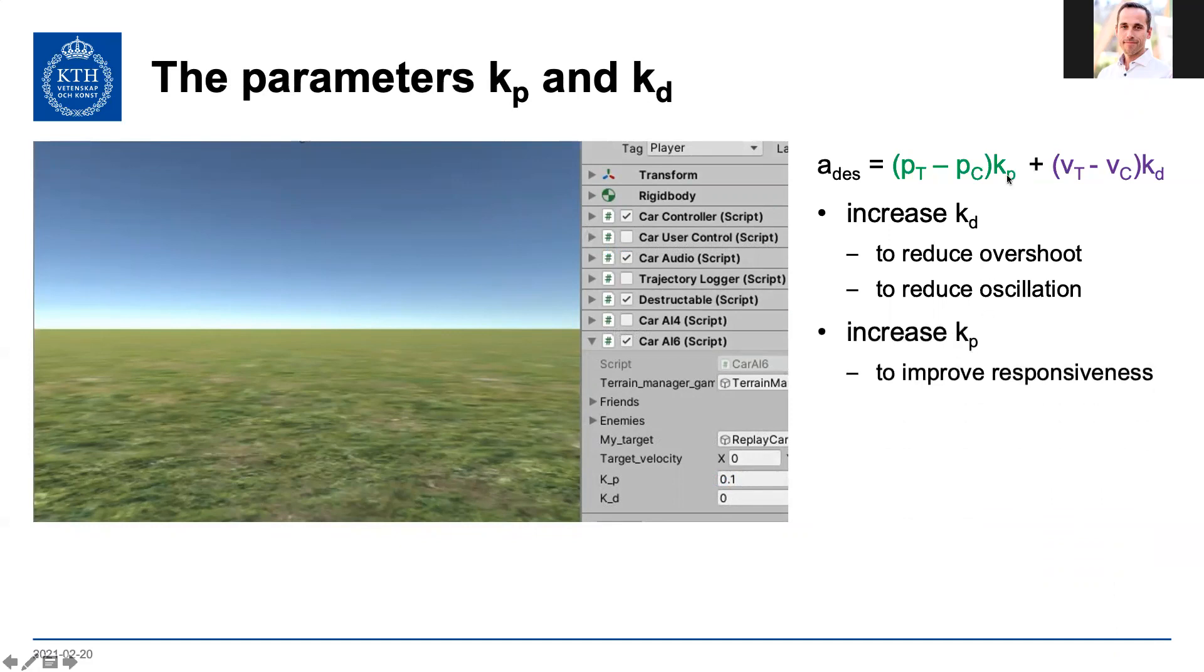Increasing kp here, on the other hand, improves responsiveness, kind of pushes you harder to where you want to be in terms of position errors. However, you need to decrease both of these if you want to have a smoother action.